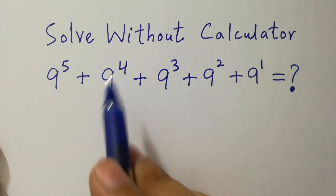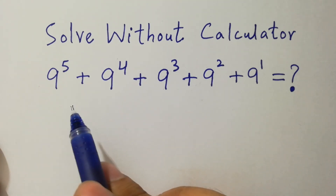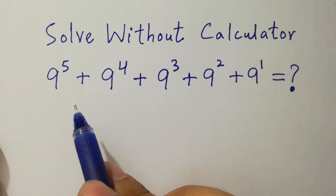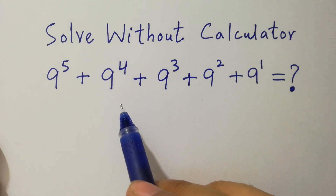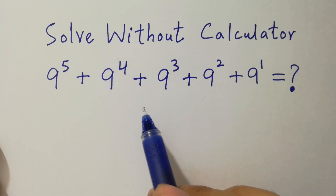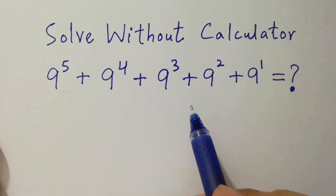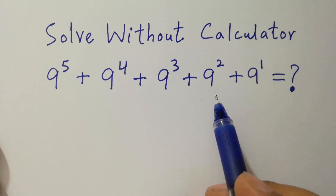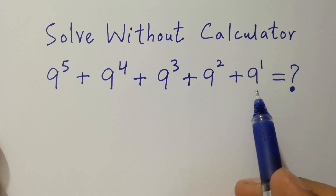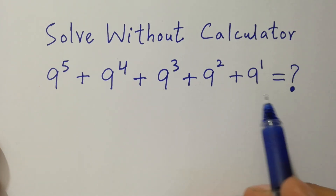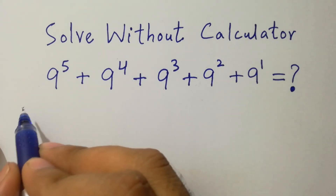Hello friends. Solve without calculator: 9 to the power 5 plus 9 to the power 4 plus 9 to the power 3 plus 9 to the power 2 plus 9 to the power 1. Let's have a solution.